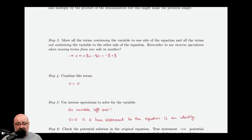So, if there's no variables left over, we look to see if it's a true statement or a false statement. 0 does indeed equal 0, so this is hopefully obviously a true statement. And when we have no variables left over, and we have a true statement, we say that the equation is an identity.